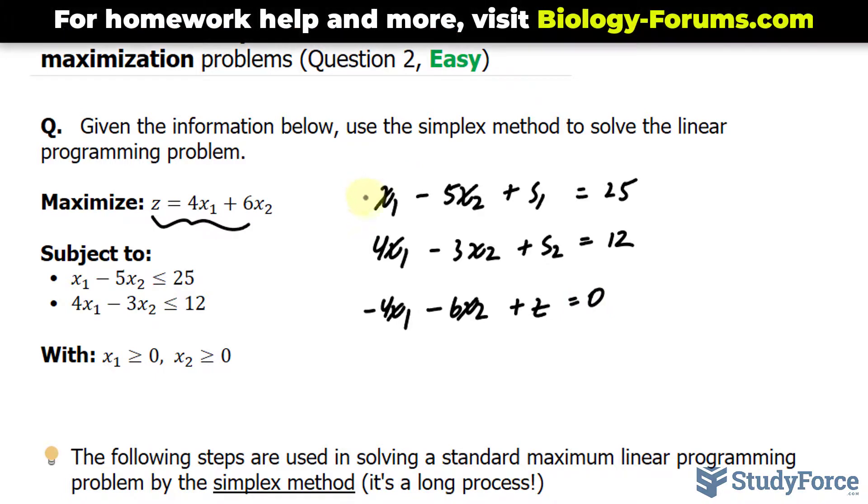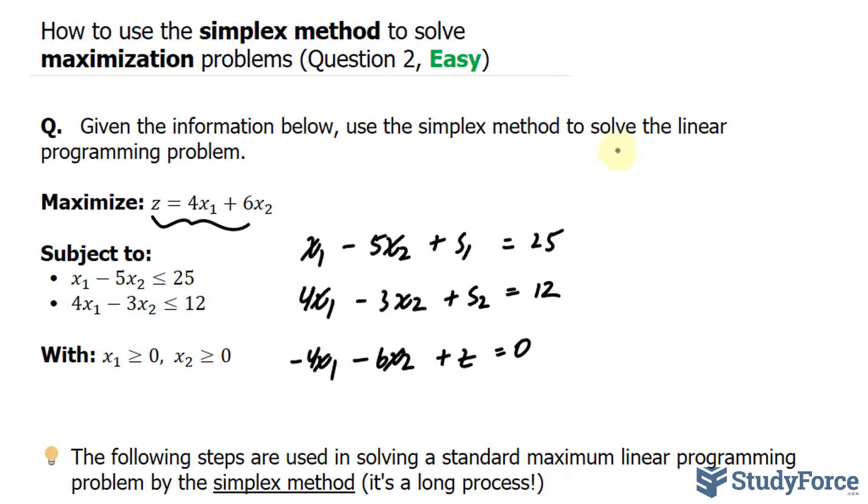Just like what we did in question number one, I'm going to change this into an augmented matrix. That augmented matrix is called the initial simplex tableau. So this equation becomes 1 minus 5 and the coefficient of s sub 1 is 1. There is no s sub 2, so we'll write down 0. There is no z in this equation, so we'll write down 0 again and 25.